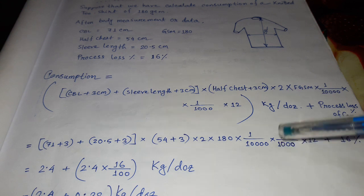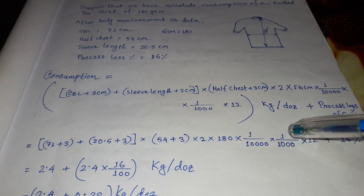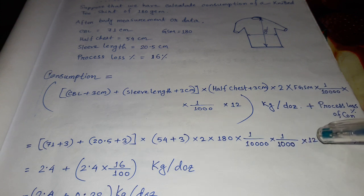And GSM 180, into 1 per 10,000, into 1 per 1,000, into 12, plus 16 percent of consumption that we calculated.